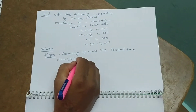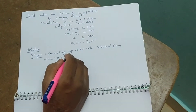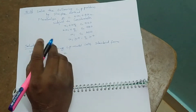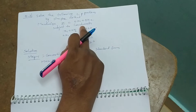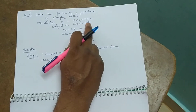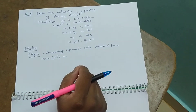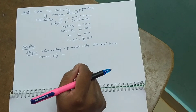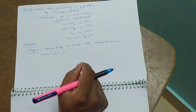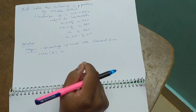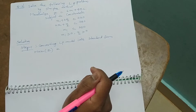Good morning. Let us see a simple simplex problem with a simple example. The problem given is: maximize z = 6x1 + 4x2, subject to constraints x1 + 2x2 ≤ 720, 2x1 + x2 ≤ 780, and x1 ≤ 320. So we have three constraints and two decision variables.